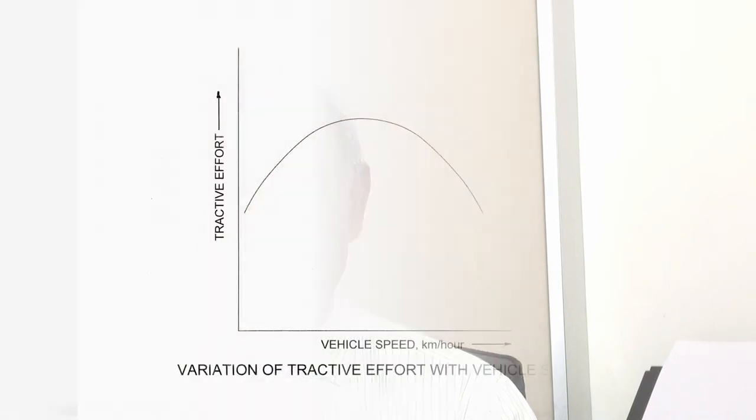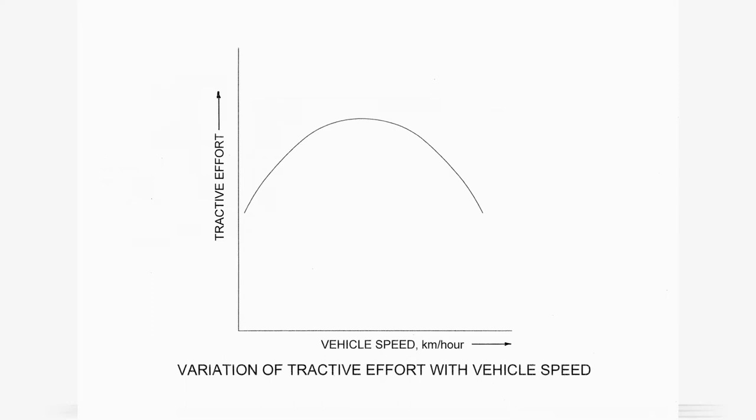Now let us discuss the performance curves. The engine torque vs engine speed curves can be equivalently represented as tractive effort vs vehicle speed curves — the nature of the curve remains the same. Practically, a gearbox can have 3, 4, 5 or more gear pairs providing corresponding gear ratios. For our purpose, let us consider two gear ratios N1 and N2.